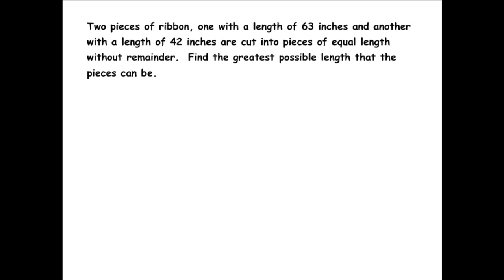But first, you have to read the story problem and use keywords to figure out that it is indeed a Greatest Common Factor story problem. The problem reads that two pieces of ribbon, one with a length of 63 inches and another with a length of 42 inches are cut into pieces of equal length without remainder. Find the greatest possible length that the pieces can be.